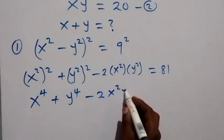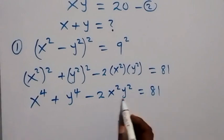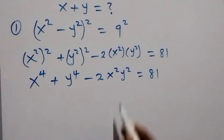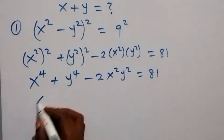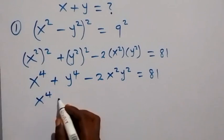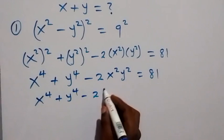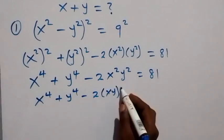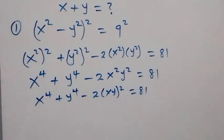y squared, which equals 81. Since we have a power of 2, we can take it out, and we have x raised to power 4 plus y raised to power 4 minus 2 times bracket xy squared, now equals 81.